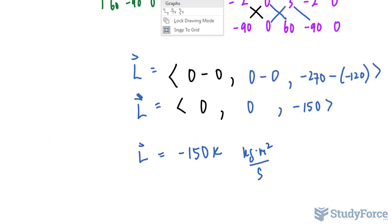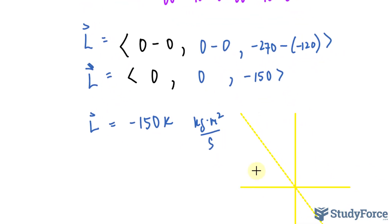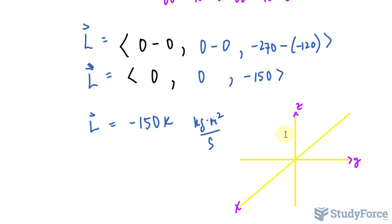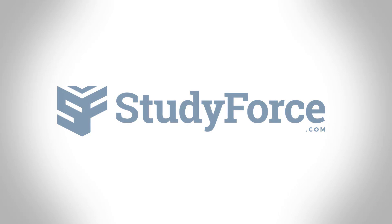Now interestingly, if we were to graph this on an x, y, z graph, the vector would look like this. It would go directly down, and the magnitude would be negative 150. And there you have it. That is how to calculate the angular momentum using determinants.